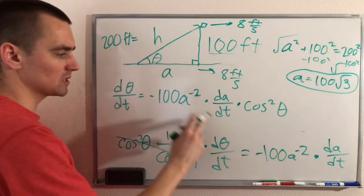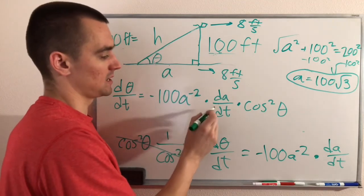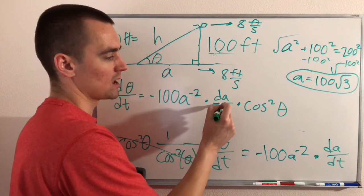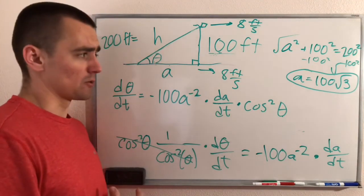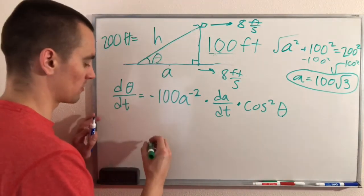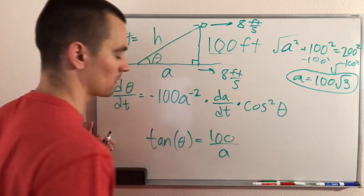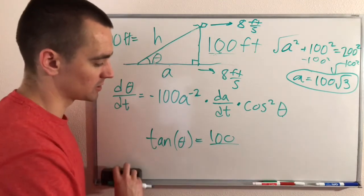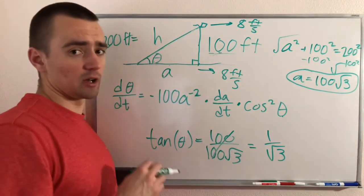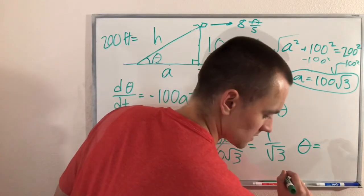Solving: a² = 200² − 100² = 40000 − 10000 = 30000, so a = 100√3. We also know da/dt = 8 feet per second since the kite is moving horizontally at 8 ft/s. To find θ, we go back to our original equation: tan(θ) = 100/a = 100/(100√3) = 1/√3. From the unit circle, tan(θ) = 1/√3 means θ = π/6.